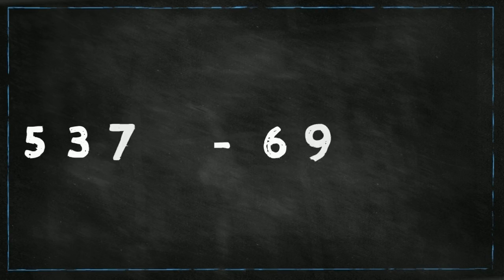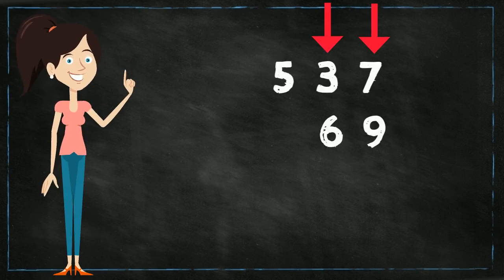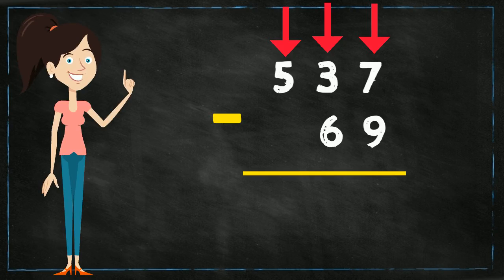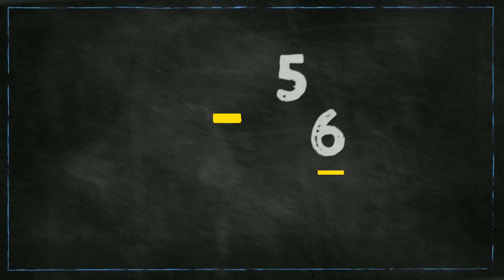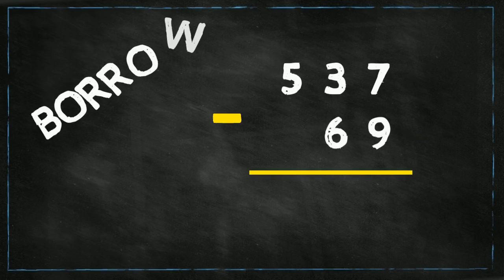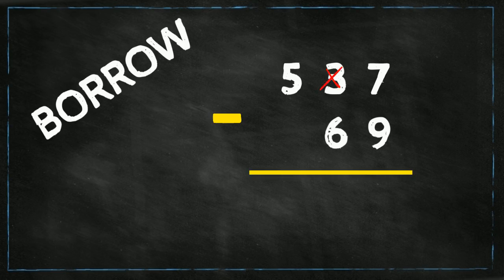Let's do another subtraction with borrowing: 537 take away 69. First we stack the numbers up with ones in one column, tens in one column, hundreds in one column, then draw the line and minus sign. Starting with the ones place: 7 take away 9 — again the top number is smaller, so we borrow from our next-door neighbor 3, changing 3 to 2, and adding 10 to 7 to make 17. So 17 take away 9 equals 8.